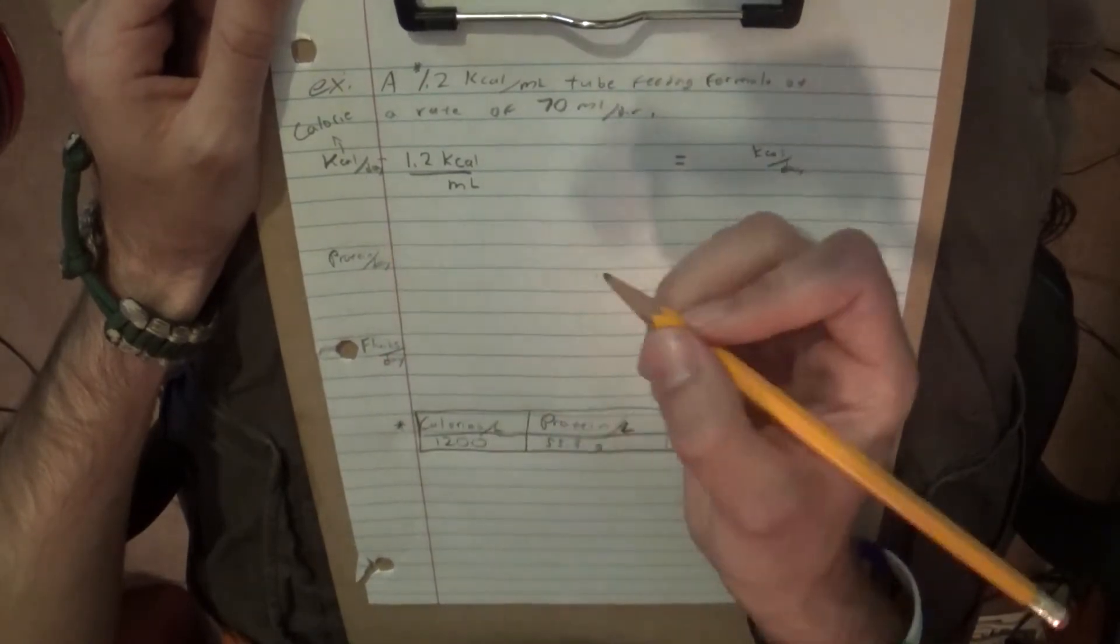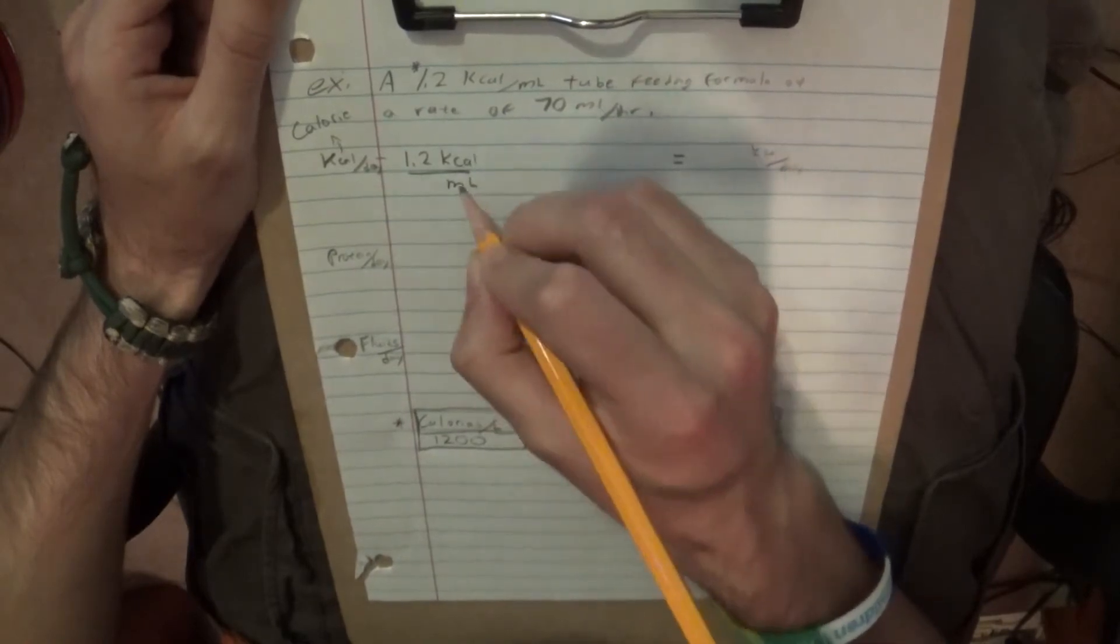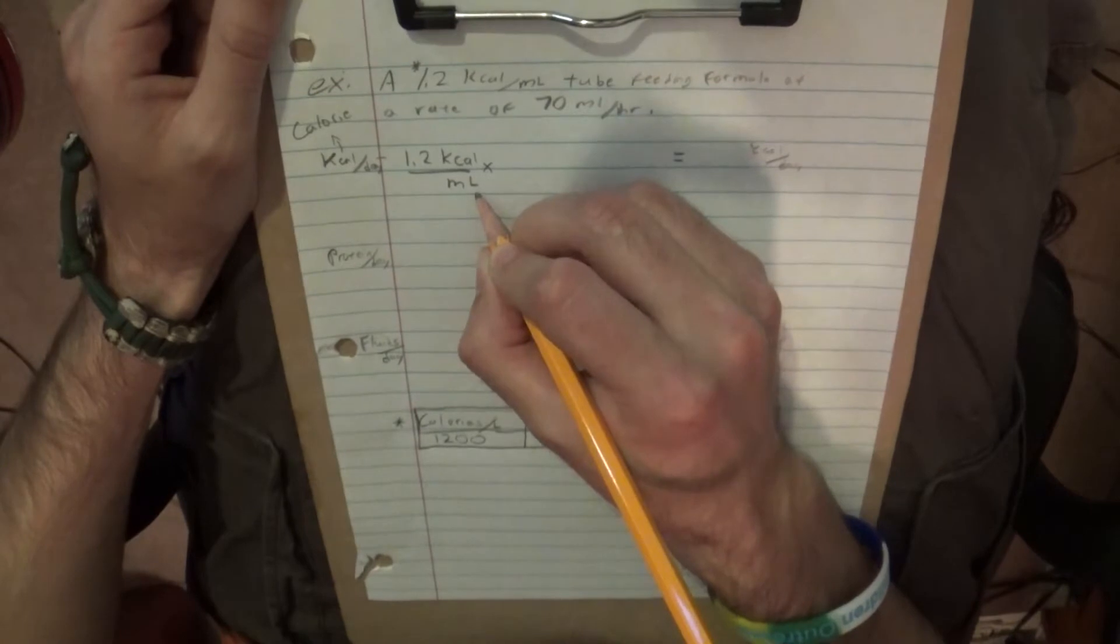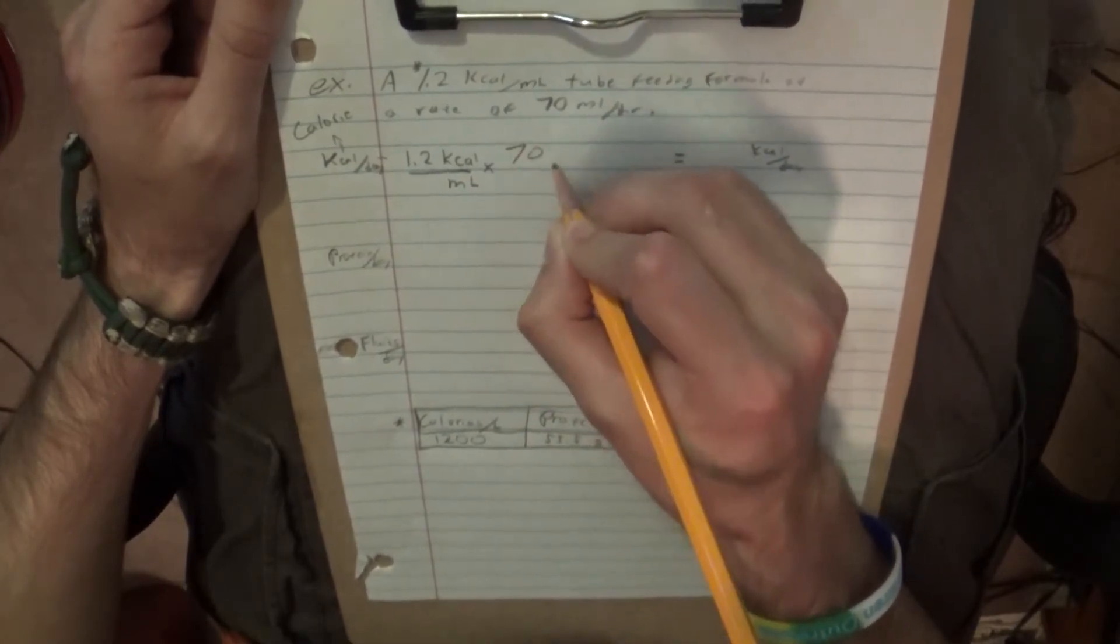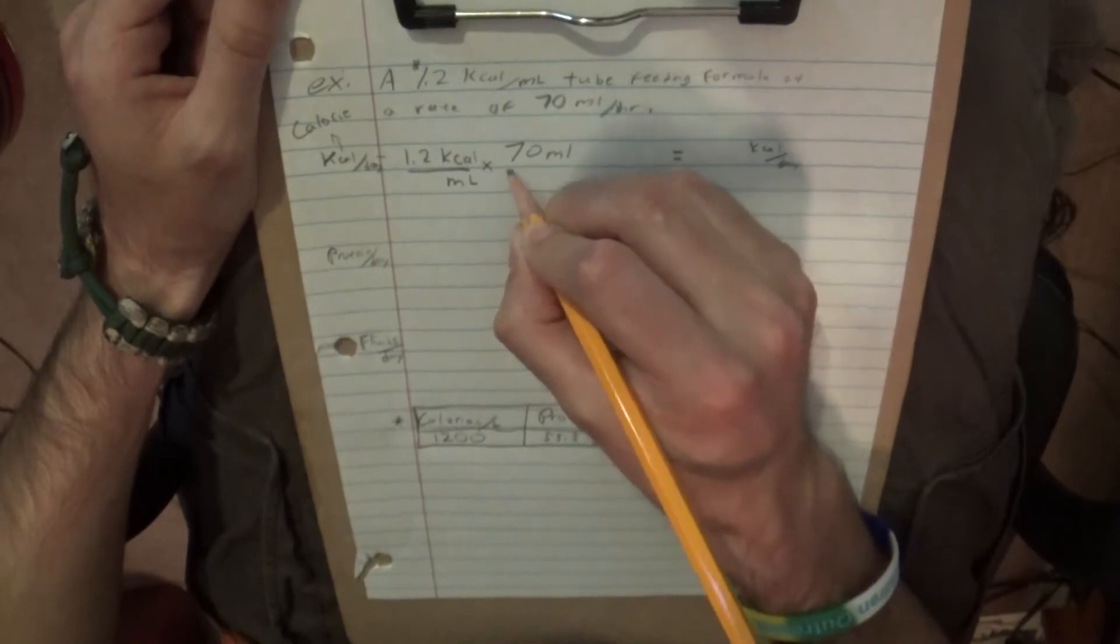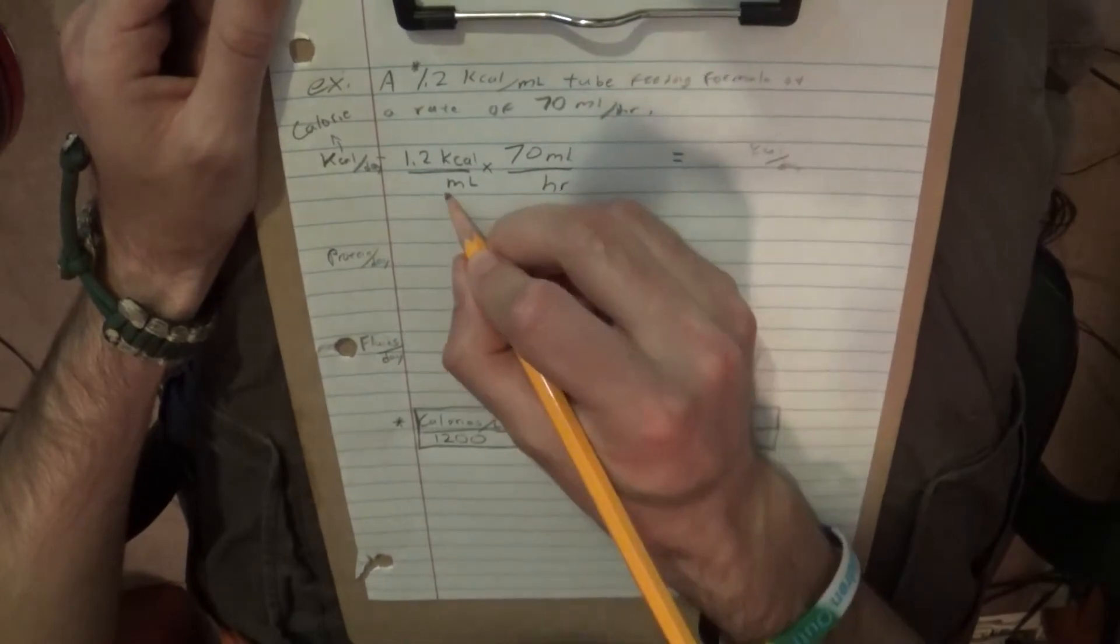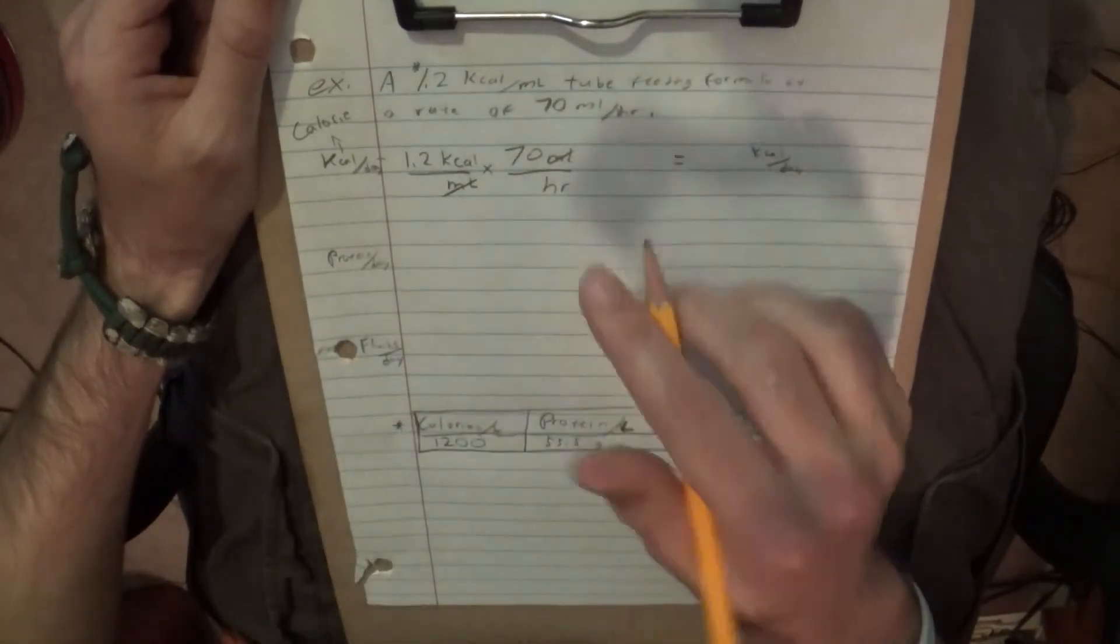And we want to find per day, right? So what do we got to do? We got to get rid of milliliters for one, and we've got to acquire day at the base. So, to get rid of milliliters, we can go and say how many milliliters per hour the formula is running. And what this is going to do is it's going to even out the equation where the milliliters cancel themselves out.